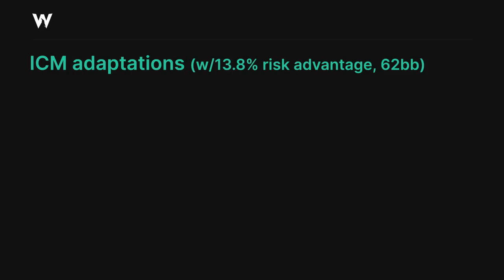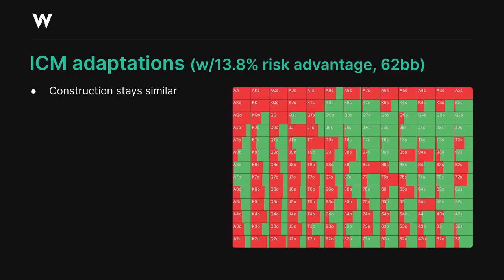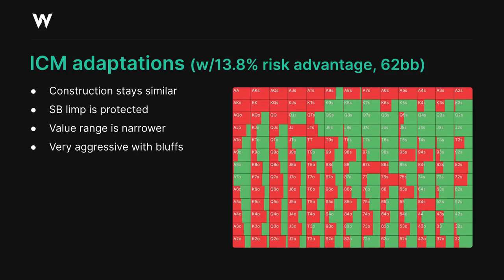To address the impact of ICM on this node, let's keep the same set of sims as before, starting with the spot where the big blind has a huge risk advantage at 62 big blind stacks. Interestingly, this spot hasn't altered significantly compared to what we saw in chip EV. It's more aggressive overall, particularly with the bluffing portion of the range, but it's not constructed in a different way. The small blind in this spot was limping a much more protected range, so while the big blind does still get to attack their limp fairly aggressively, they can't go overboard.